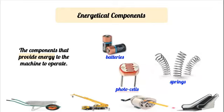On the other hand, the energetical components of compound machines are the ones that actually provide the energy to the machine. Typical examples include batteries, which provide chemical and electrical energy; photocells, which provide electrical and thermal energy; and springs, which provide potential energy to the different machines. And there are many others. Hence, in a compound machine, the energetical component provides the energy, which will later be transformed into mechanical energy by the mechanical components.